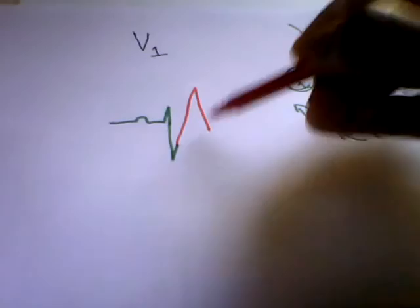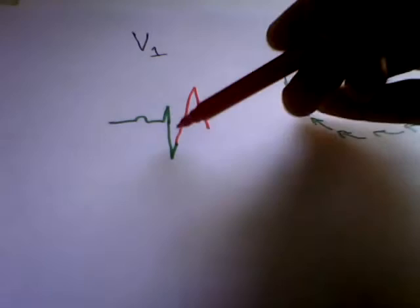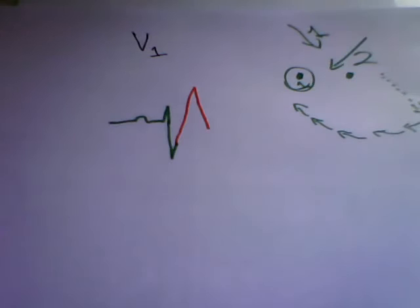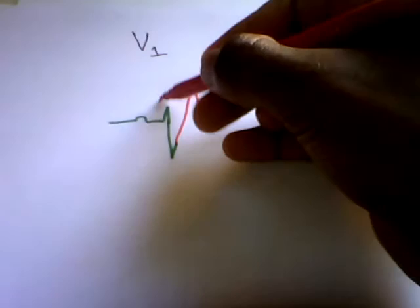This is what will give rise to this R wave here. Now the reason why it is broad is because this conduction is very slow, therefore it takes time for it to complete. Therefore that is what gives rise to the broad QRS complex in right bundle branch block and left bundle branch block as well.